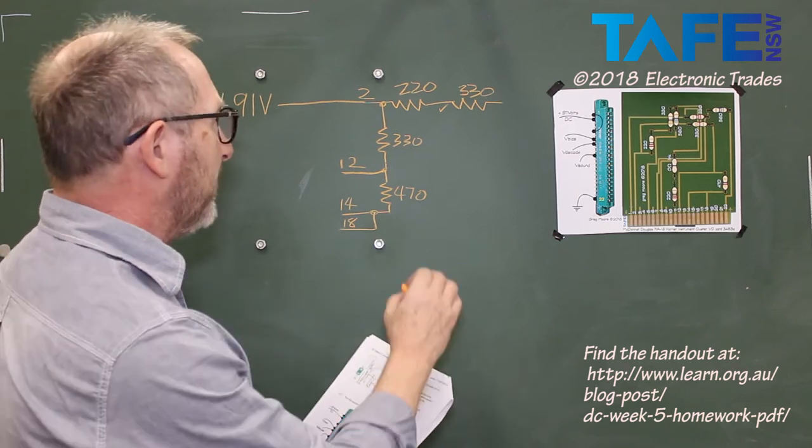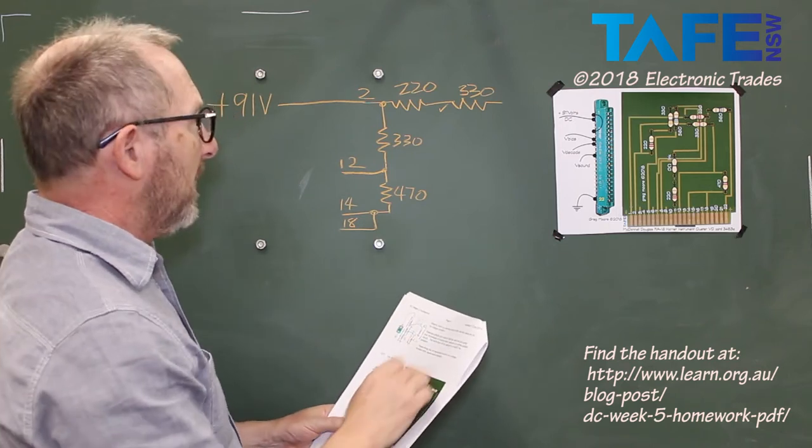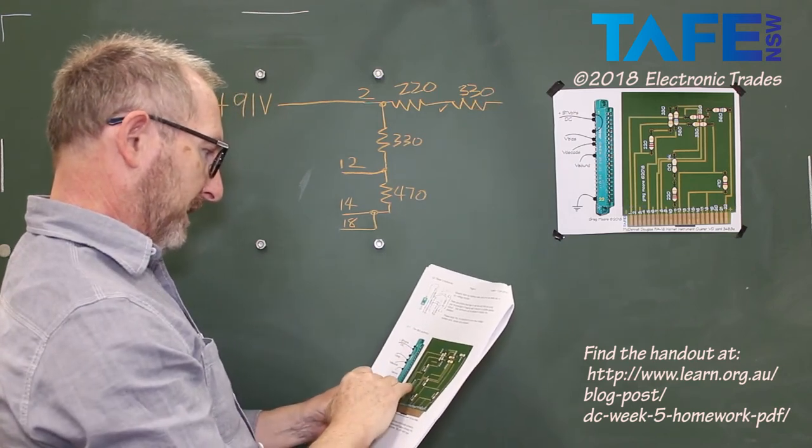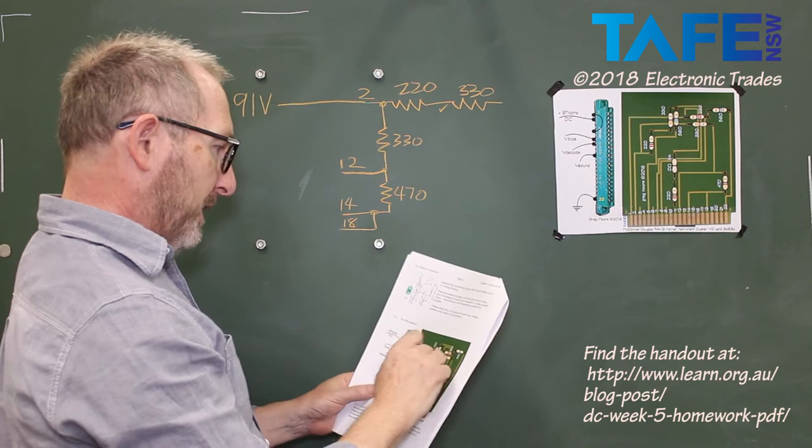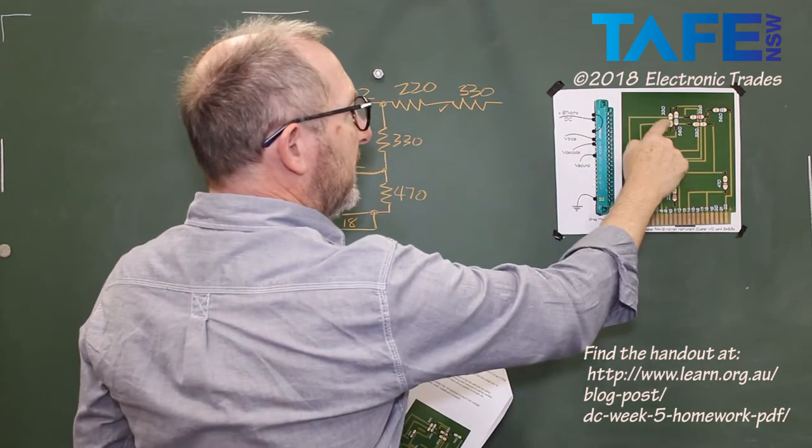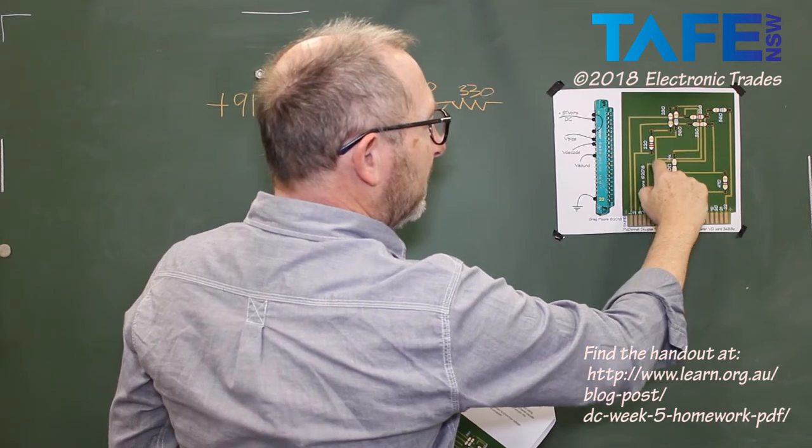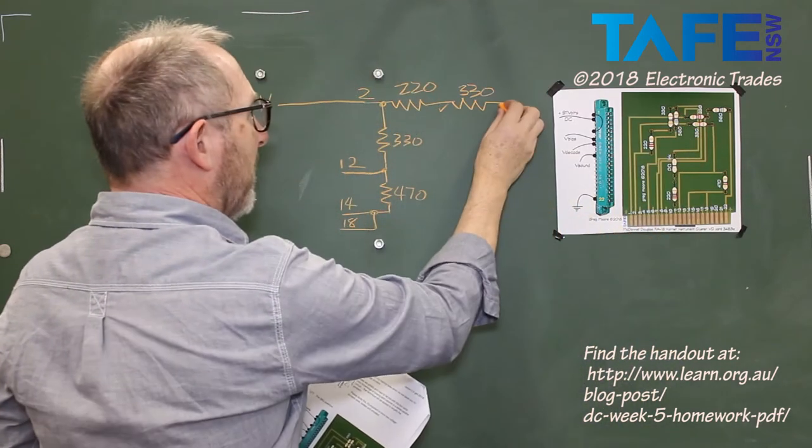I think I'm pretty right with that one then. No, I've got this 330 which hasn't ended up going anywhere yet. 330 actually comes, that's this 330 here comes up and it meets a 560 which comes down to pin 5.